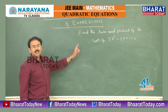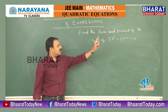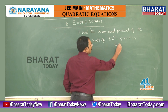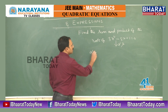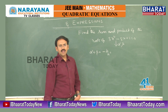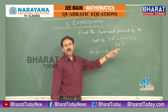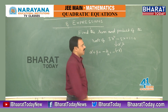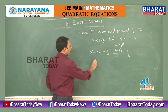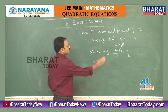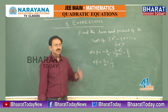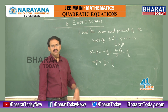Find the sum and product of the roots of 3x² - 8x + 1 = 0. Suppose the roots are alpha, beta. Sum of the roots alpha + beta = -b/a = -(coefficient of x)/(coefficient of x²) = -(-8)/3 = 8/3. Product of the roots alpha·beta = c/a = constant term / coefficient of x² = 1/3. So alpha + beta = 8/3 and alpha·beta = 1/3.